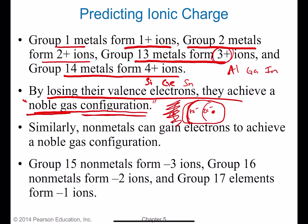The same principle applies to non-metals, except they gain electrons instead of losing them. They have the same goal: to achieve a complete outer shell — a noble gas configuration — where their outermost level ends up with the same number of electrons and the same arrangement as a noble gas.